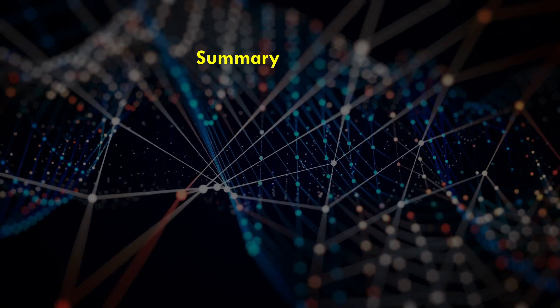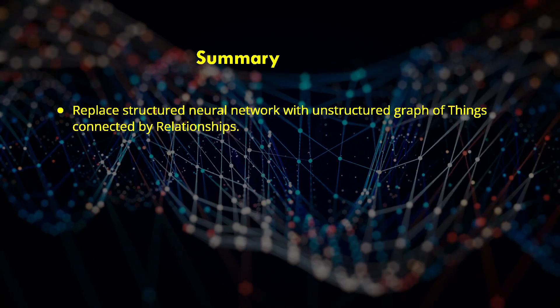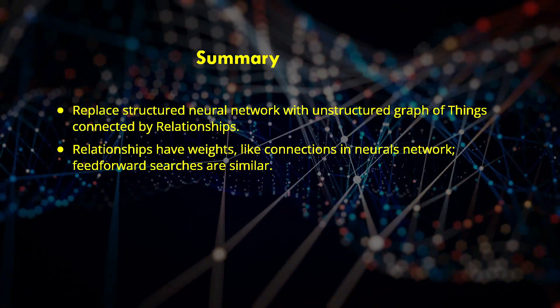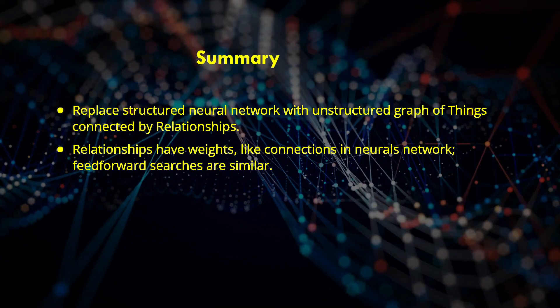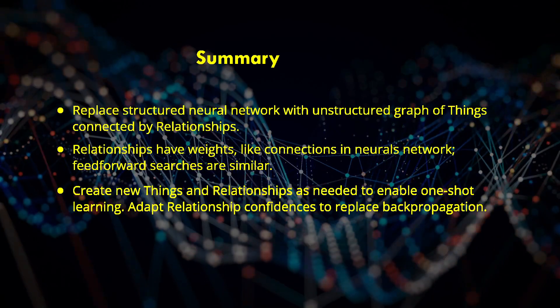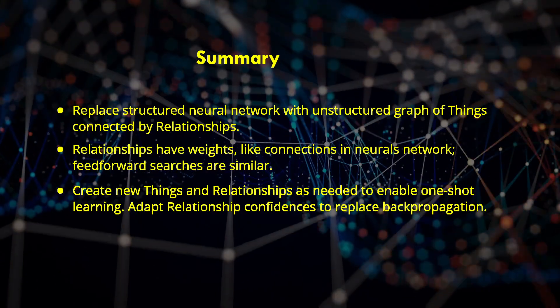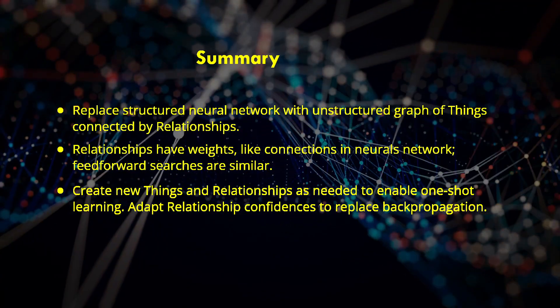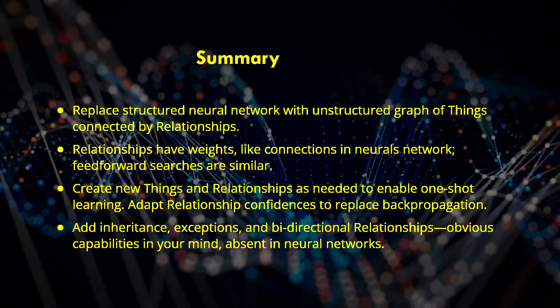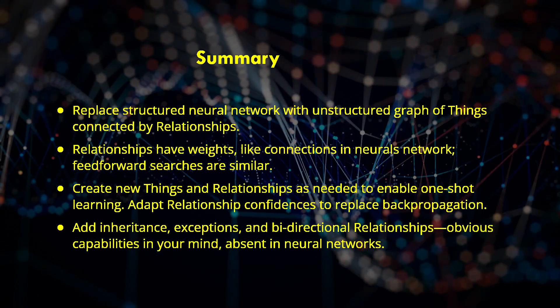So let's summarize. We've replaced the structured neural network with an unstructured graph of things connected by relationships. Relationships still have weights, just like the connections in the neural network, and feed-forward searching remains similar. But we've added the ability to create new things and relationships as needed to enable one-shot learning and the ability to adapt relationship confidences to replace the backpropagation algorithm. Lastly, we've added attribute inheritance with exceptions and bidirectional relationships, obvious capabilities in your mind which are absent in neural networks.